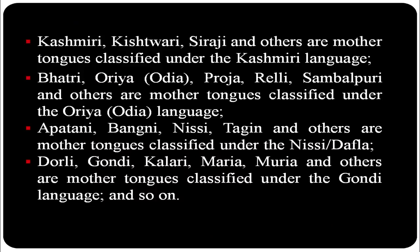Similarly, Kashmiri and others are classified under the Kashmiri language; Bhatri, Oriya, Proja, Reli, Sambalpuri under Oriya; Apatani, Bangni, Nishi, Tagin under Nishi or Dafla; and Gondi, Kalari, Maria, Muria under Gondi. According to the Census of India, there are 100 languages spoken by more than 10,000 persons. Languages spoken by fewer than 10,000 persons are not listed as a policy introduced after 1961.